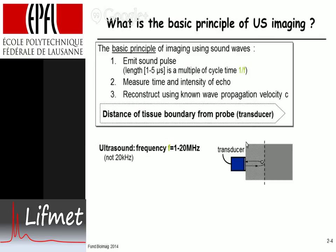The sound wave is emitted and comes back, and from the time and intensity of the echo one can calculate the distance of the boundary from the probe. The distance is very simply: speed times time divided by two. The time is from when the pulse was emitted until the echo is received. The factor of two accounts for the sound wave having to travel into the tissue and back — it travels twice the distance.